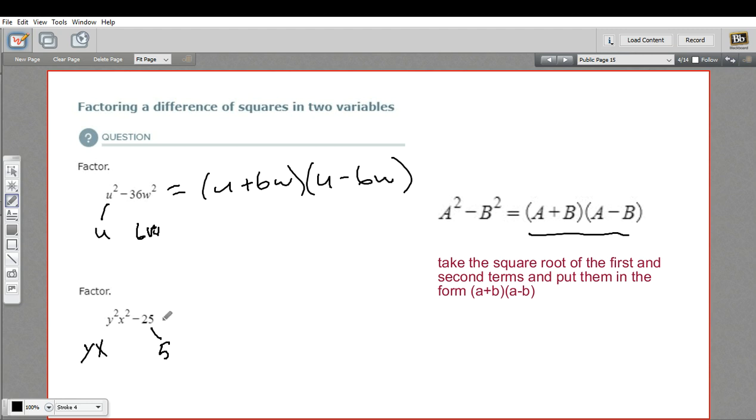So now we've got our two pieces. We can put them together in that form. So we've got yx plus 5 times yx minus 5. So that is a little bit of work with factoring a difference of squares.